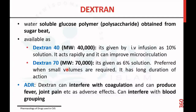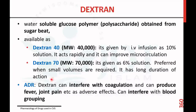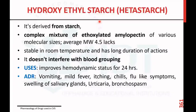Dextran 70 has a molecular weight of 70,000 and is given as a 6% solution. It is preferred when a small volume is required and has a long duration of action. Adverse drug reactions include interference with coagulation, fever, joint pain, and interference with blood grouping.